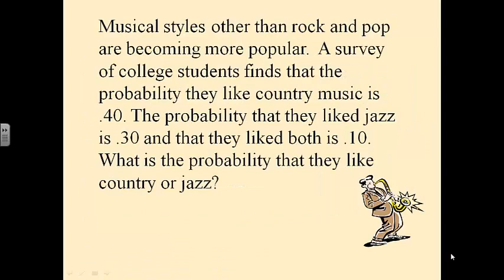Musical styles other than rock and pop are becoming popular. A survey of college students finds the probability that they like country music is 0.40 — country music is the best type of music. The probability that they like jazz is 0.30, and the probability that they like both is 0.10. What is the probability that they like country or jazz? This is non-disjoint — you can have people who like both — so we use the addition rule for non-disjoint events: probability of country plus probability of jazz minus the probability of both.